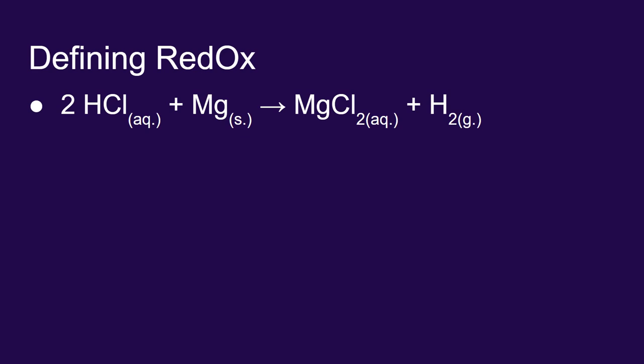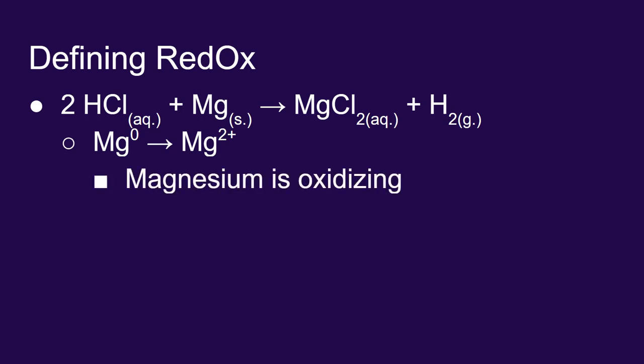Let's look at that other reaction we saw where we put magnesium and hydrochloric acid. Magnesium is going from a neutral state to a positive two state in this process. Its charge is increasing. We could say that magnesium is oxidizing. Hydrogen in the hydrochloric acid has a plus one charge, but as a product, it's in its elemental pure form and so it has no charge. The charge is going down from a plus one to a zero. We could say hydrogen is reducing.